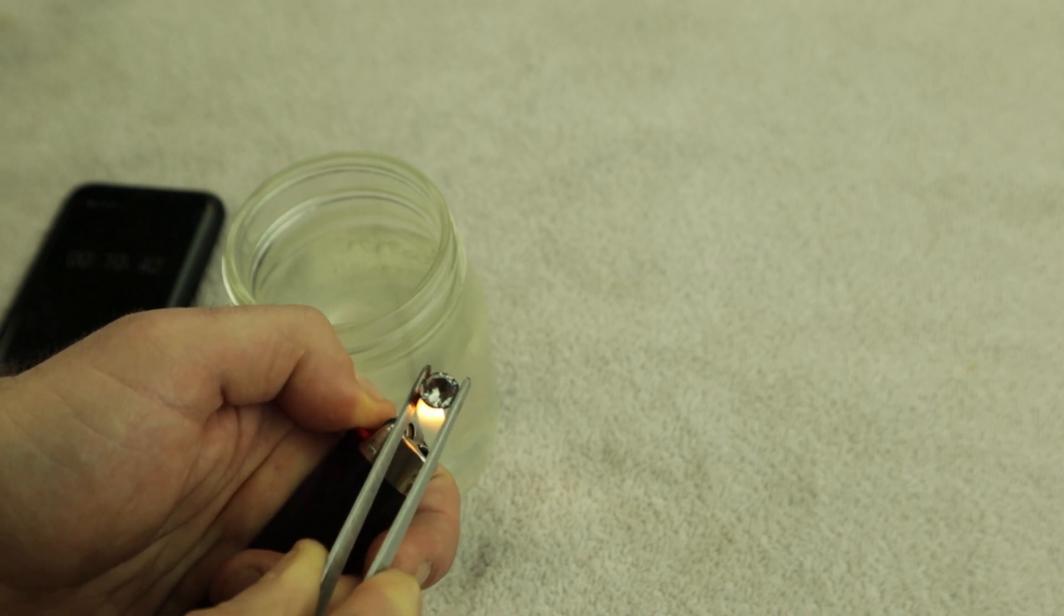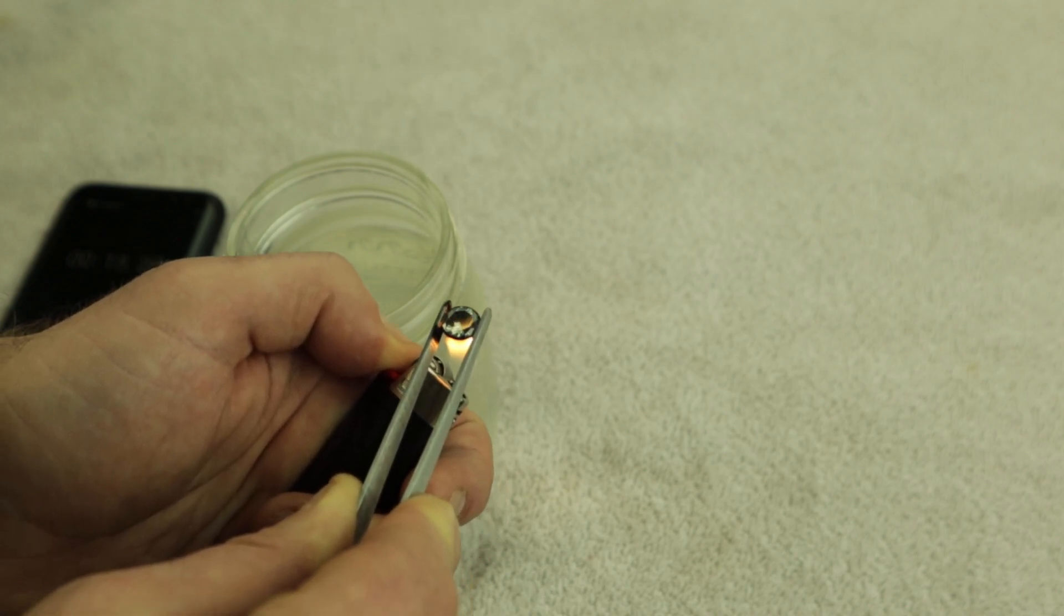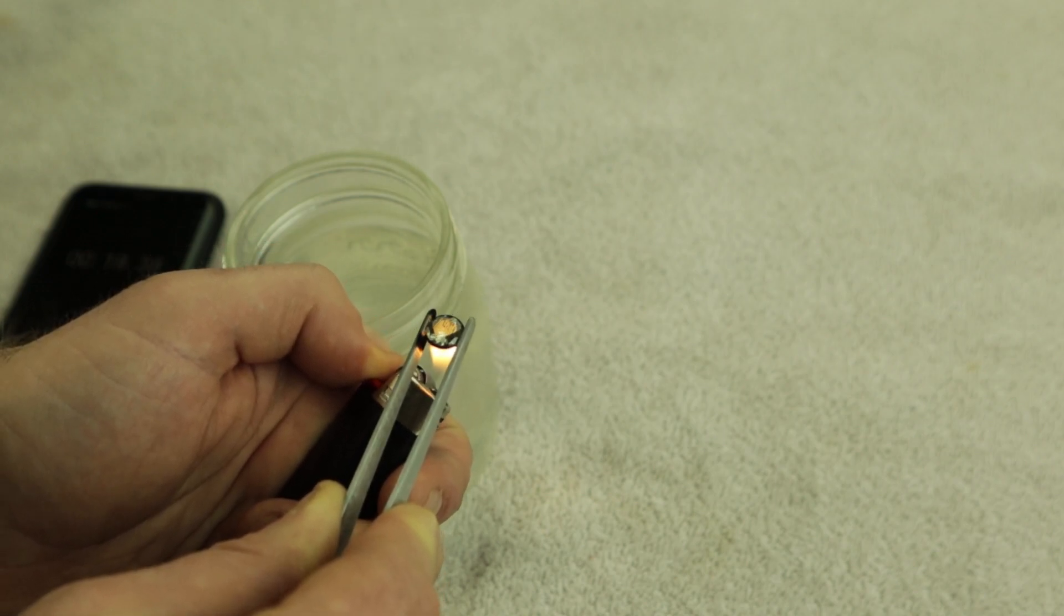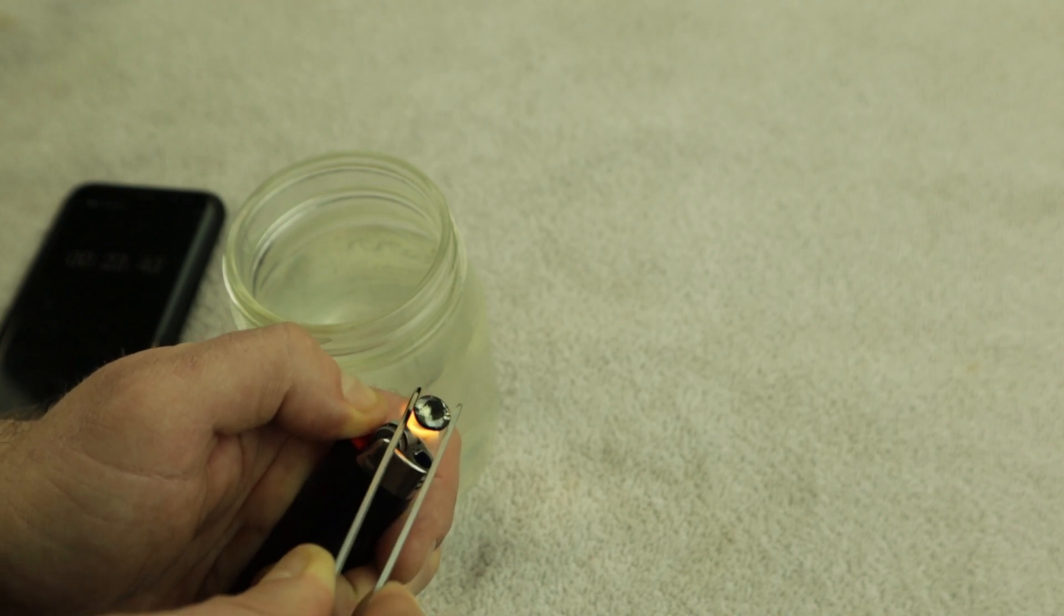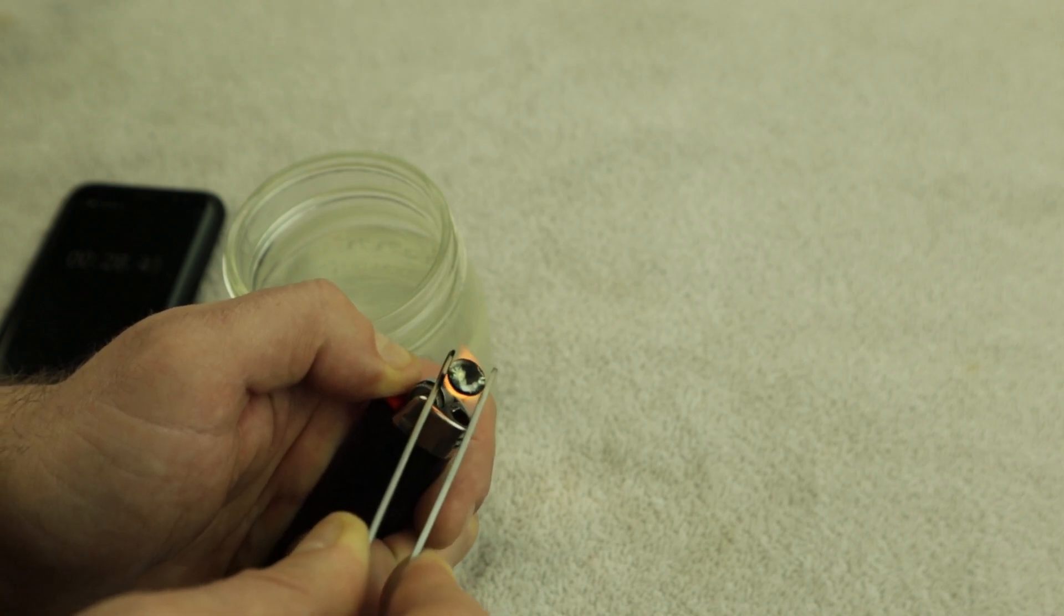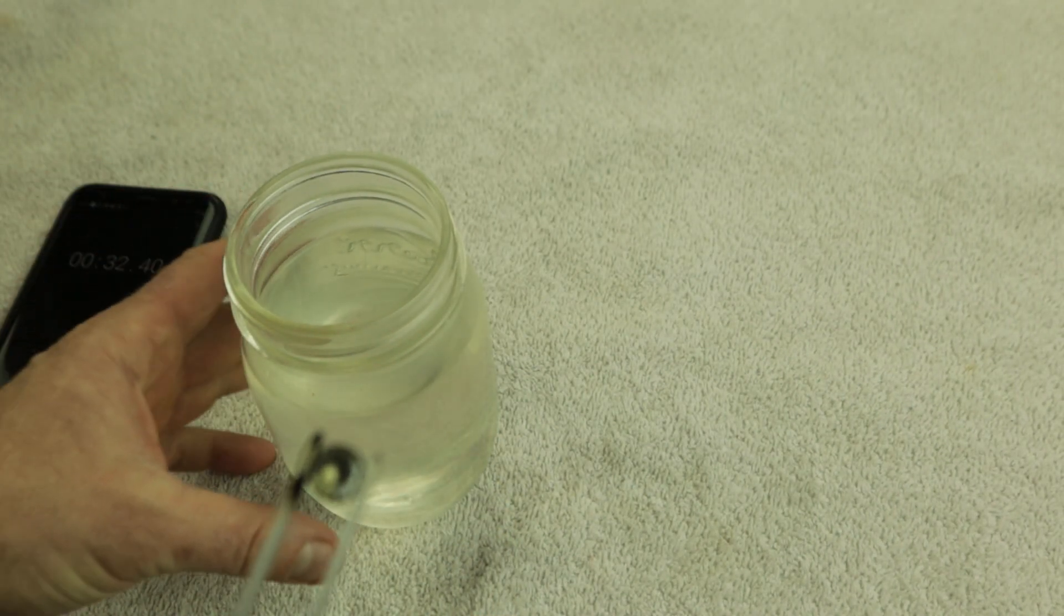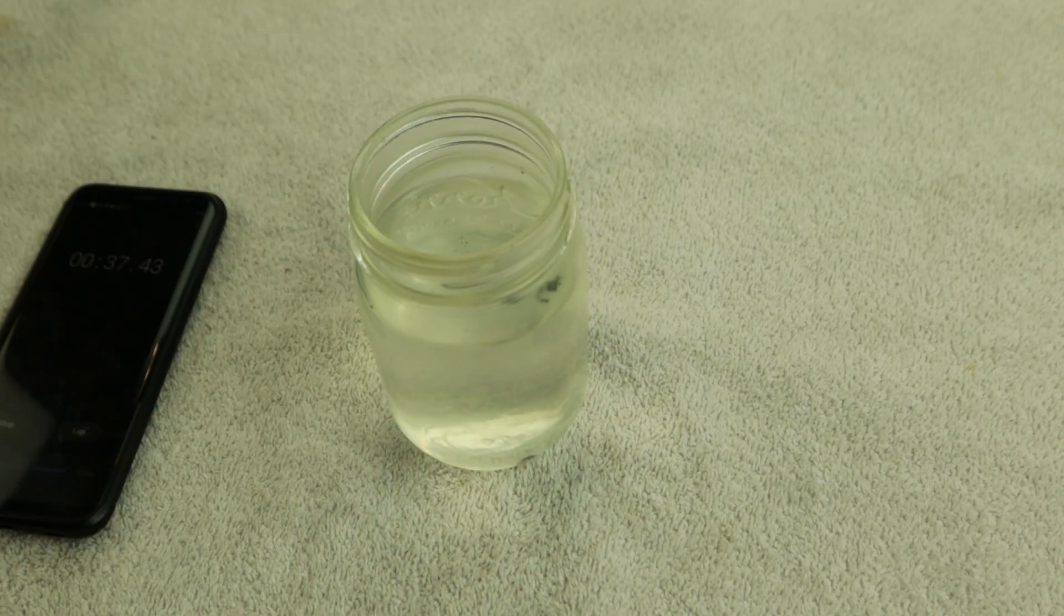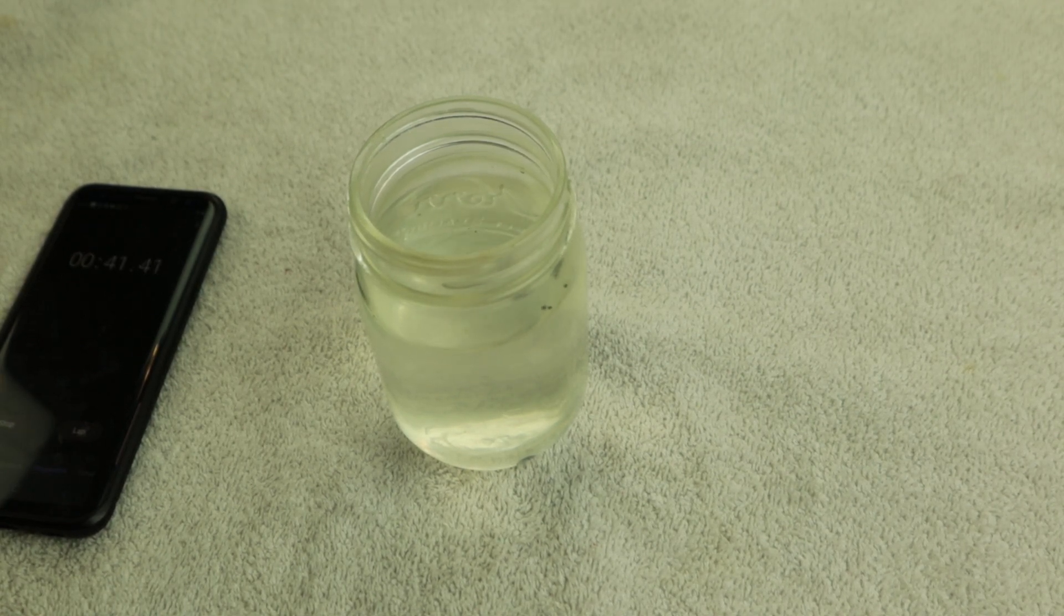The soot from the smoke is gonna make it black, that's normal whether it's real or fake, but it will all just come right off in the water. 15 seconds... in the flame, above the flame, all over the place... five, four, three, two, one, that's 30 seconds. And now we are gonna drop it in the water and see what happens.